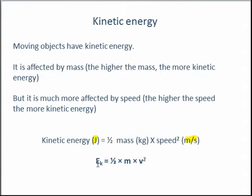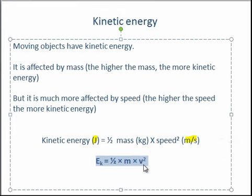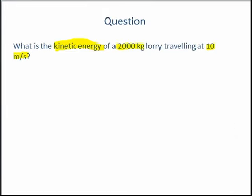So we just need to use this equation. I'm going to quickly write it so we can remember what it is. Our kinetic energy equals a half times mass times speed squared. Firstly, we need to work out what a half of our mass is. That's 2,000 divided by 2, which equals 1,000. So that's our half times mass.